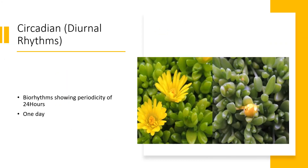The first type of biological rhythm is circadian, i.e., diurnal rhythm. This repeats after 24 hours — that is, it has a periodicity of 24 hours, or one day.